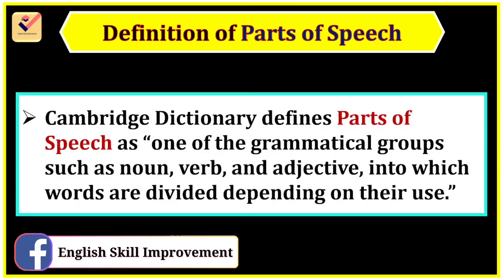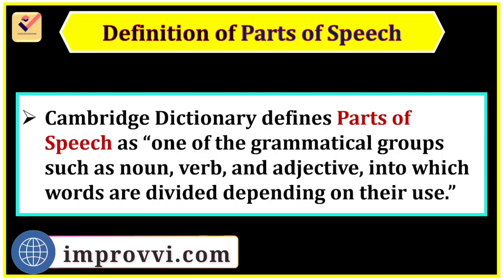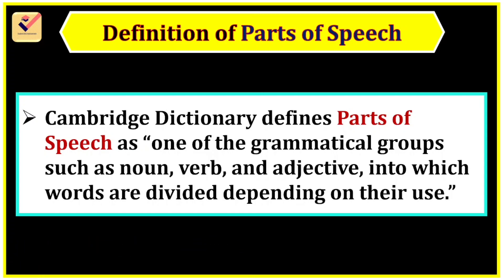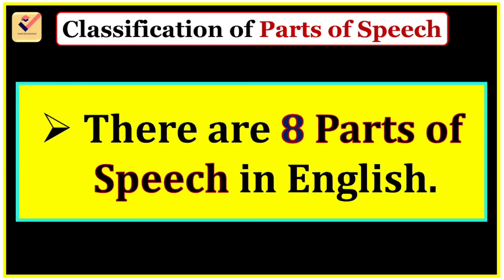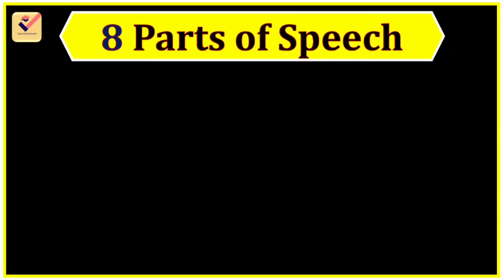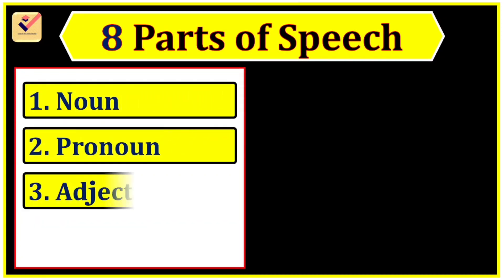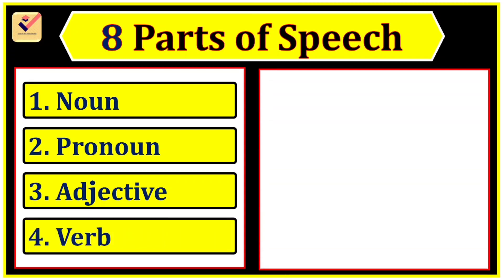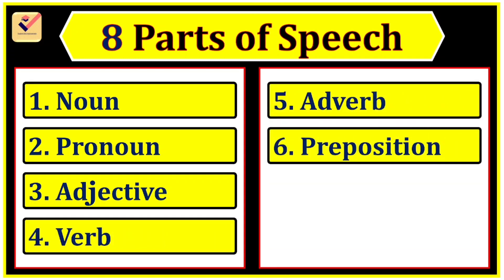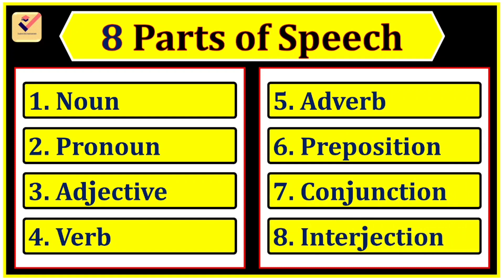Cambridge Dictionary defines parts of speech as one of the grammatical groups such as noun, verb, and adjective into which words are divided depending on their use. Classification of Parts of Speech: There are eight parts of speech in English — Noun, Pronoun, Adjective, Verb, Adverb, Preposition, Conjunction, and Interjection.